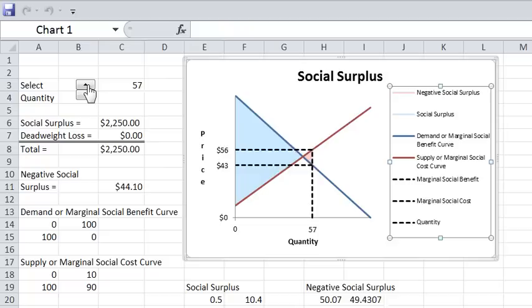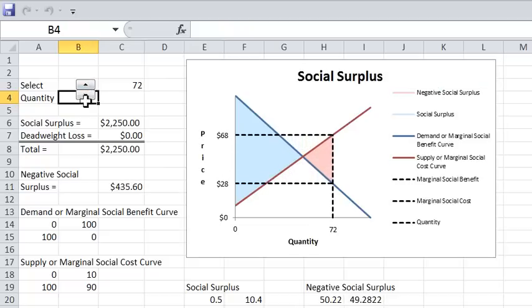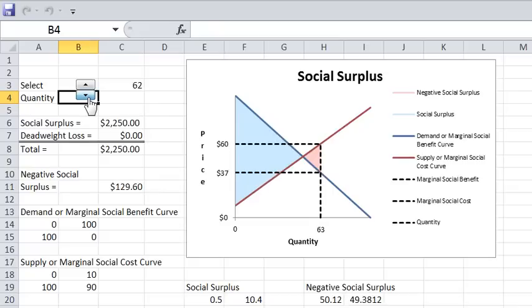You can select the quantity and when you do that it moves this vertical line either to the right or to the left. That's the quantity axis, so that's what you're controlling.